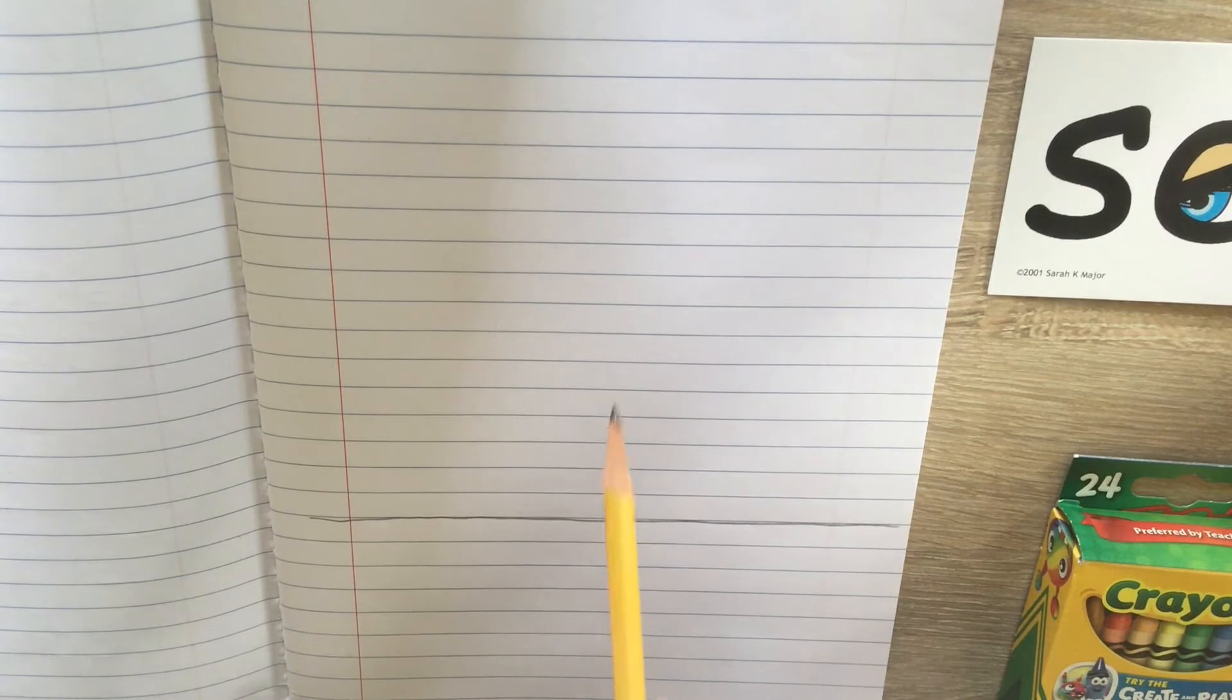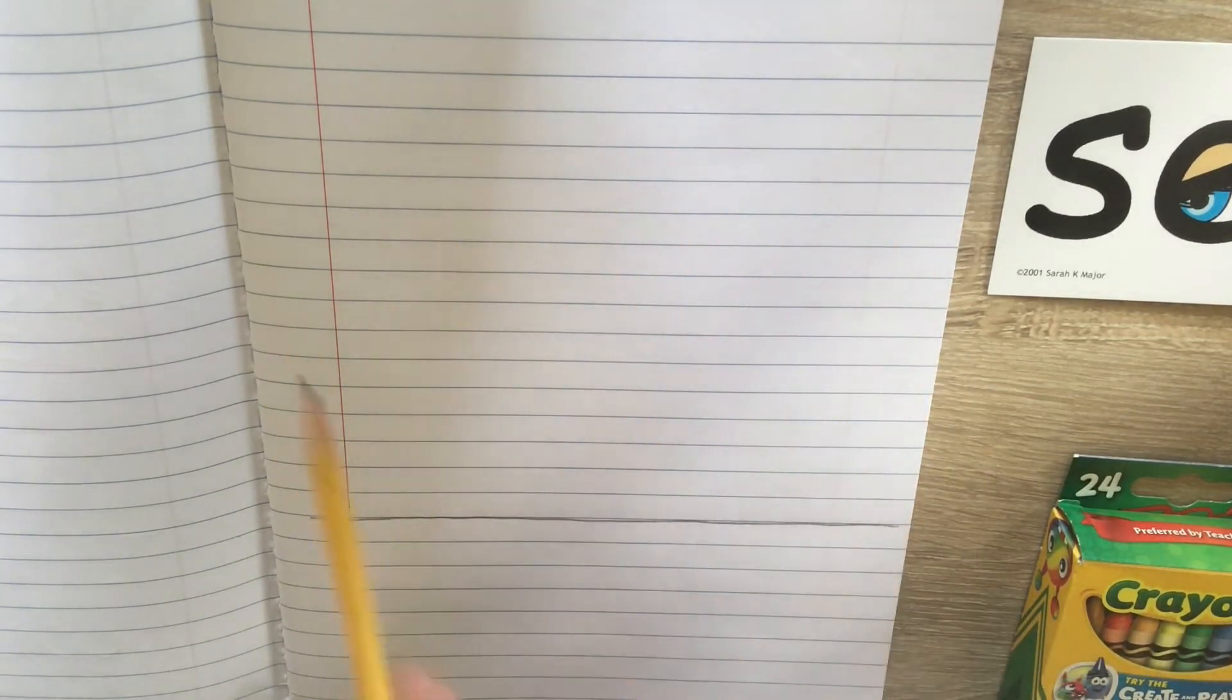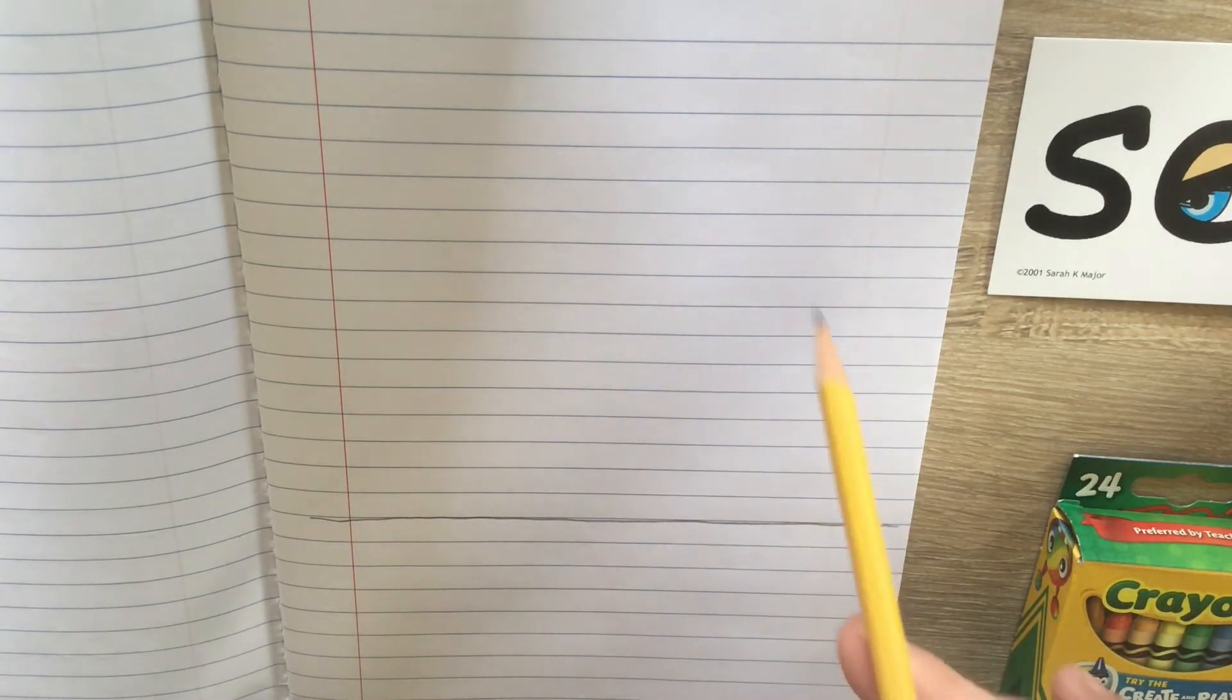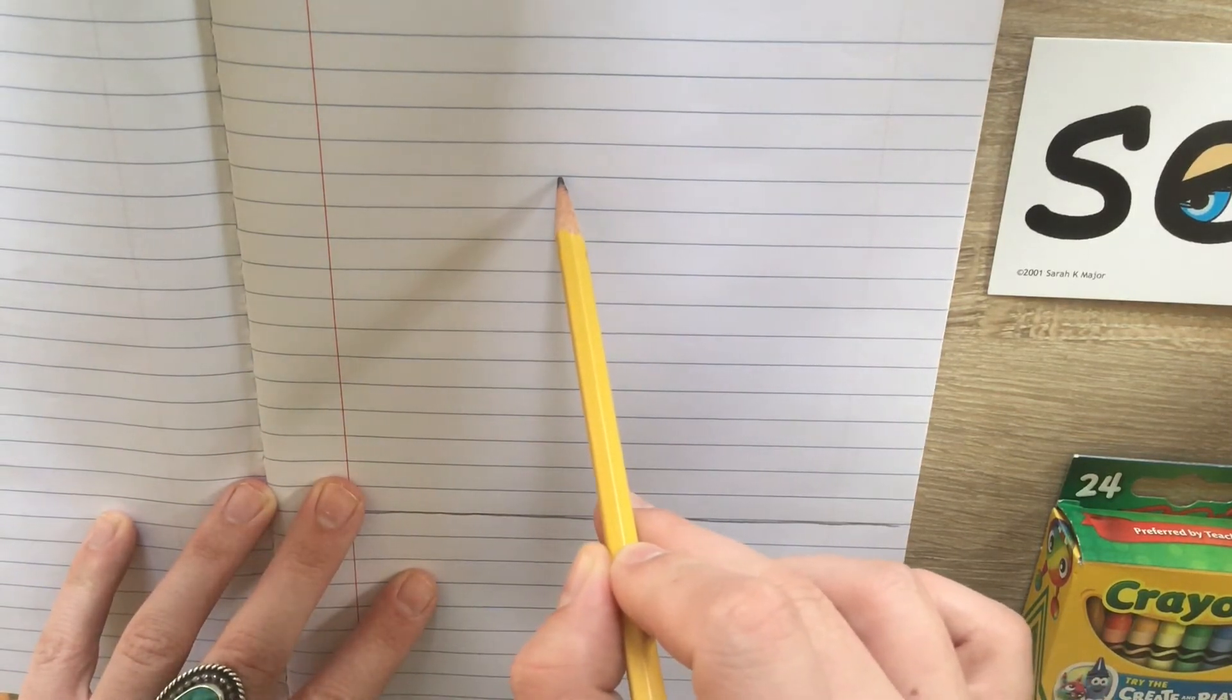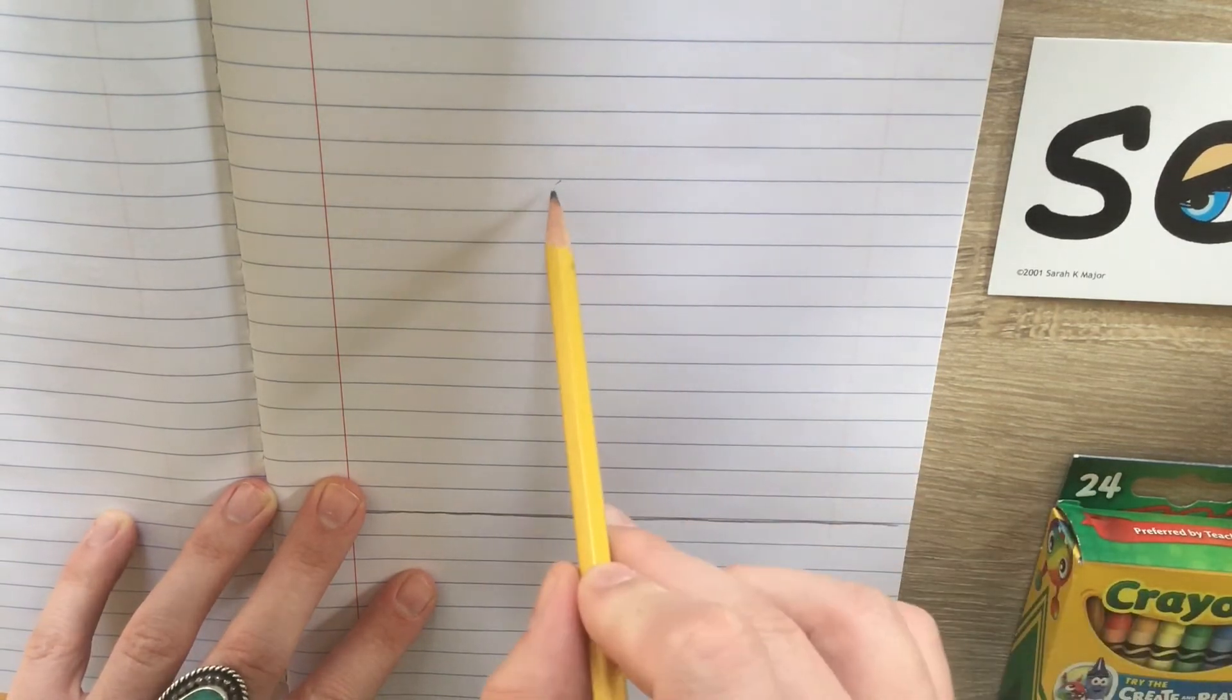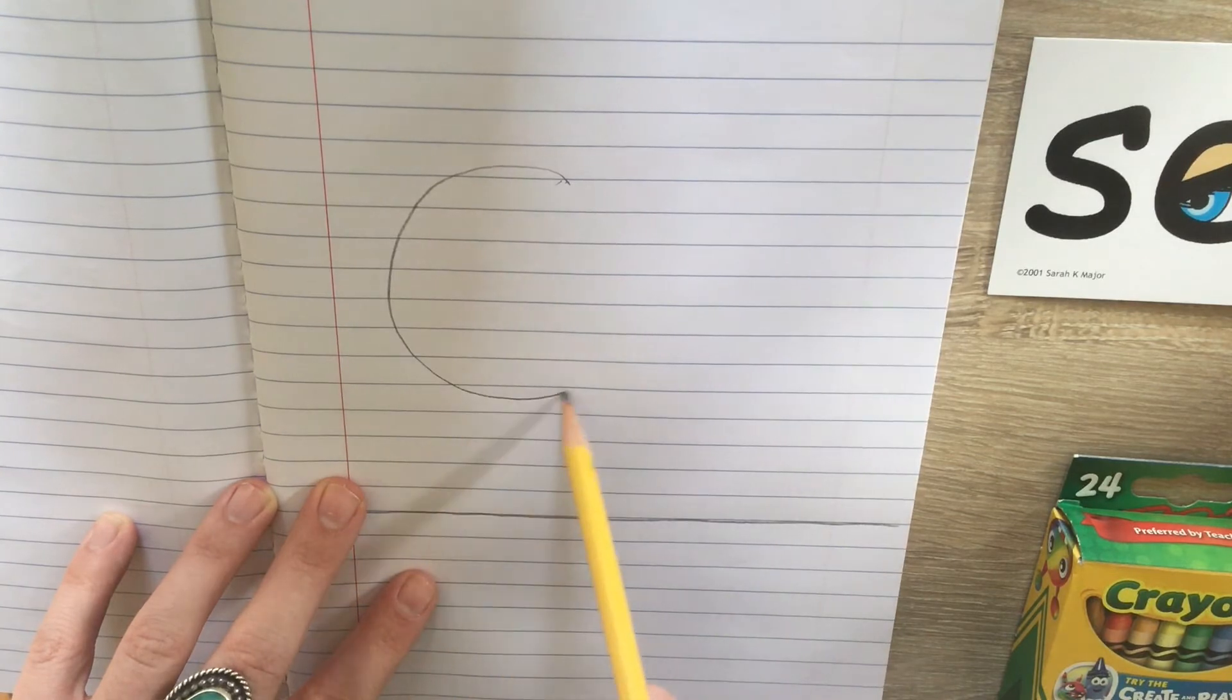Let's see. I am going to go ahead and draw a pumpkin. A pumpkin is kind of an oval shape. Sometimes it is more of a circle shape, but it also has a dent on the top. So to make a pumpkin, start near the top but leave some space because you will need some space for the stem and the vines. And draw a letter C shape.